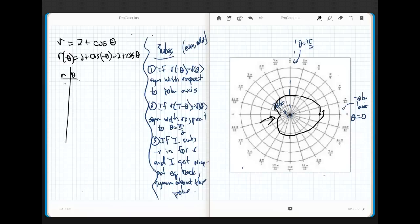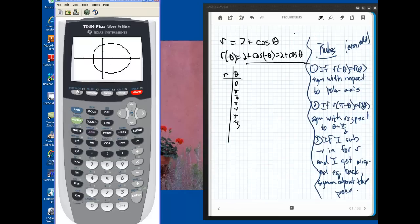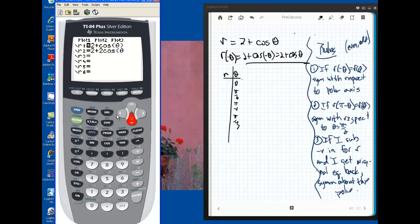Now again, we could go through why that happened. So I could start with theta equals zero. I could go to pi sixth, pi fourth, pi thirds, et cetera. I could use the fact that I have this symmetry about the polar axis, right? But like I said, it's always easier to graph these things and play with them that way.